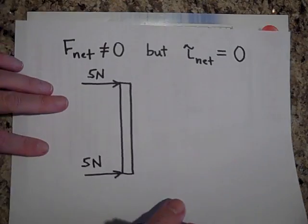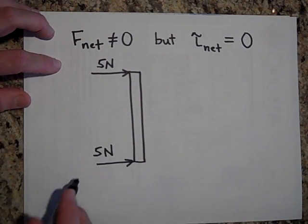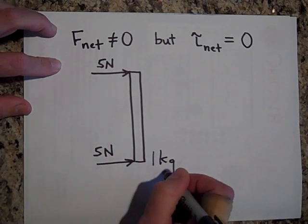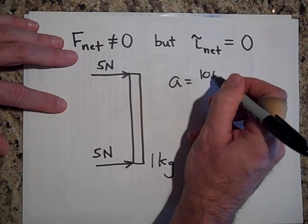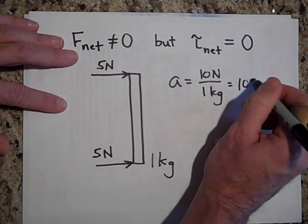Here's an example of a net force doesn't equal zero. The net force in this case is 10 newtons. If this is one kilogram and this is 10 newtons, the acceleration will be 10 newtons divided by one kilogram. That's 10 meters per second squared.